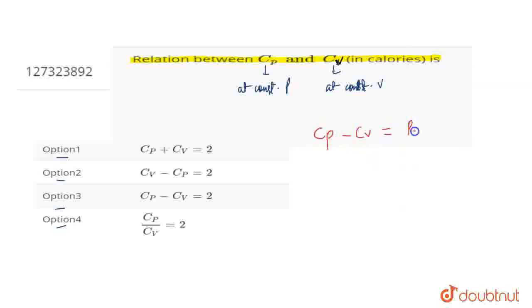The relation between CP and CV is equal to nR, where n is the number of moles of gas. Since the value of n is 1, CP minus CV equals R.